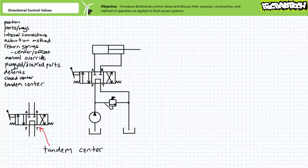To resolve at least one of these scenarios, consider another type of center position known as a tandem center. A tandem center still locks the actuator position, even in mid-stroke. However, the pressure relief valve is not actuated since the P port is not blocked but rather routed to T. The tandem center allows the pump to dump flow to tank at extremely low pressure, making it a more efficient solution for a system that needs to lock the actuator and experiences significant idle time.